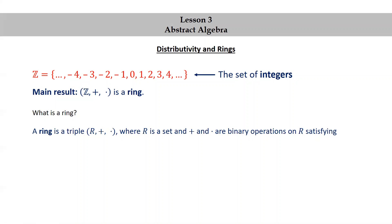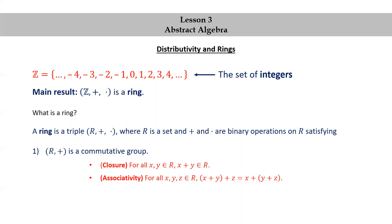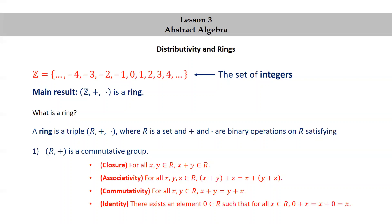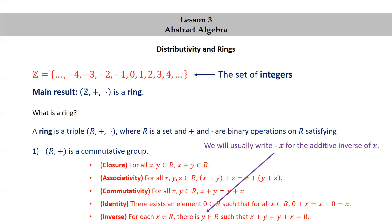We'll define this with three meta-properties. The first is that R together with addition is a commutative group, consisting of: closure (for all x, y in R, x + y is in R); associativity (x + (y + z) = (x + y) + z); commutativity (x + y = y + x); identity (there exists 0 in R such that 0 + x = x + 0 = x); and inverse (for each x in R, there is y in R such that x + y = y + x = 0). We usually write −x for the additive inverse, so x + (−x) = (−x) + x = 0.